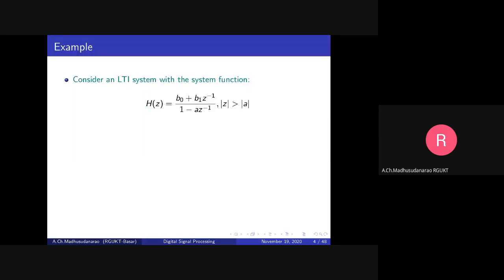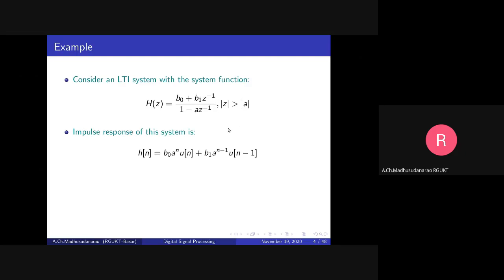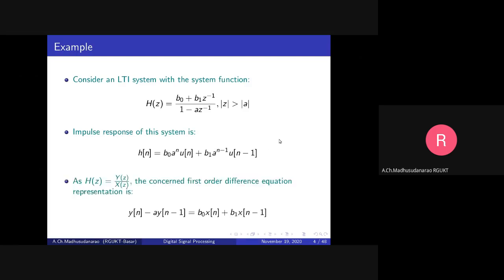For example, consider an LTI system with a system function H(z) = Y(z)/X(z). The impulse response for this system can be expanded as b0 divided by (1 - a*z^(-1)) plus b1*z^(-1) divided by (1 - a*z^(-1)), with the corresponding ROC. Applying the inverse z-transform gives the impulse response. We can rewrite this in the form of a difference equation, since H(z) = Y(z)/X(z). Cross-multiplying gives the difference equation.